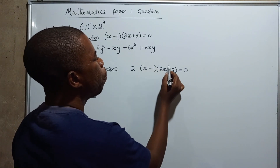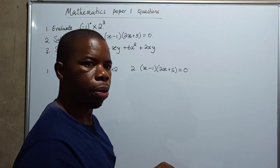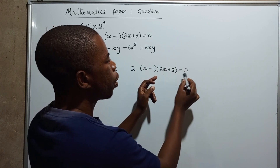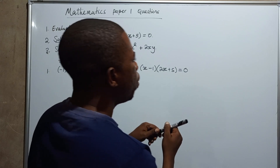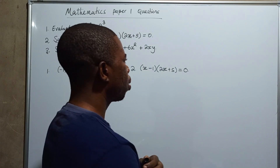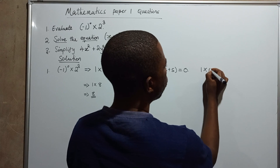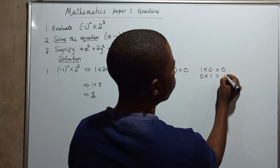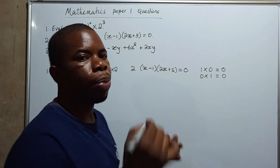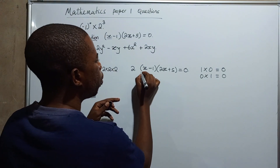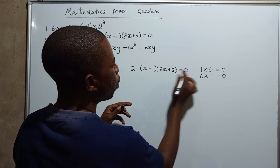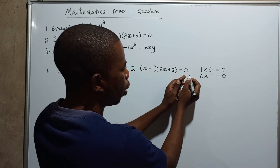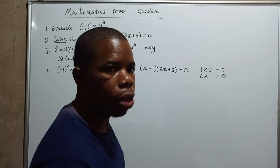Notice we have one expression in brackets being multiplied by another expression in brackets, and we are getting zero. Think back to basic mathematics: one times zero equals zero, or zero times one equals zero. Anything multiplied by zero gives zero. So since we're multiplying these two expressions and getting zero, it means either the first expression is zero or the second expression is zero.